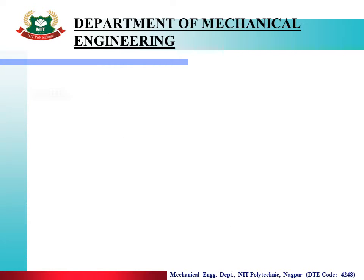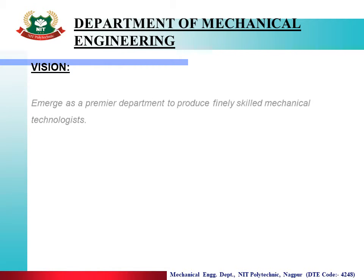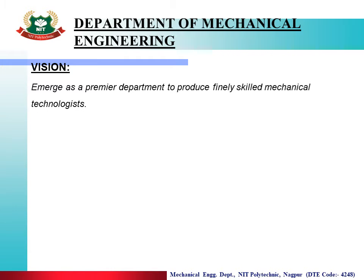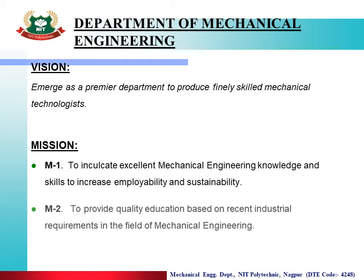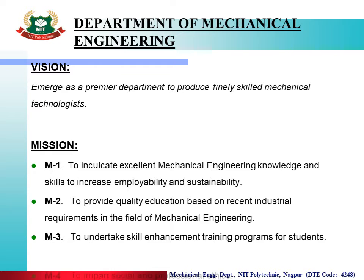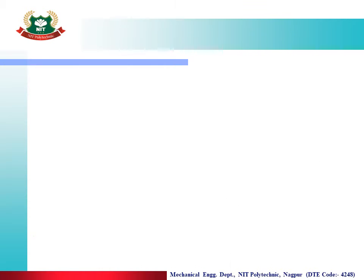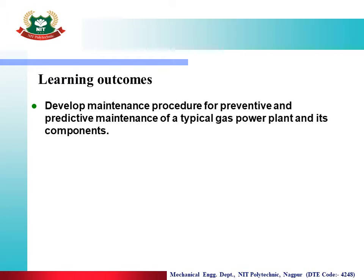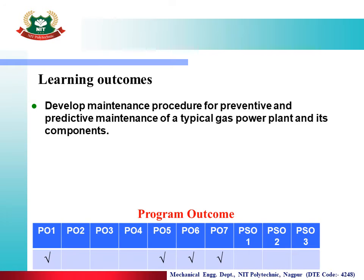The Department of Mechanical Engineering has the following vision and mission — please read the vision and mission from this slide. Learning Outcomes: After completion of this practical video lecture, you will be able to develop maintenance procedure for preventive and predictive maintenance of a typical gas power plant and its components. Program Outcomes are mapped by the table given below as PO1 to PO7 and PSO1 to PSO3.